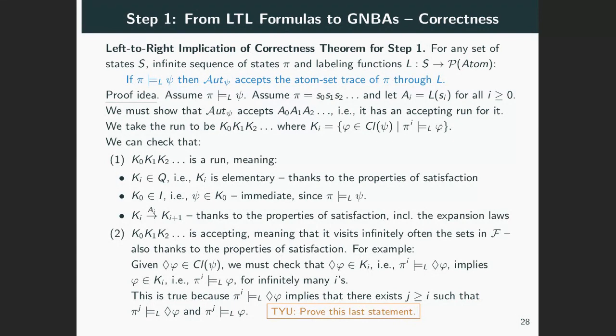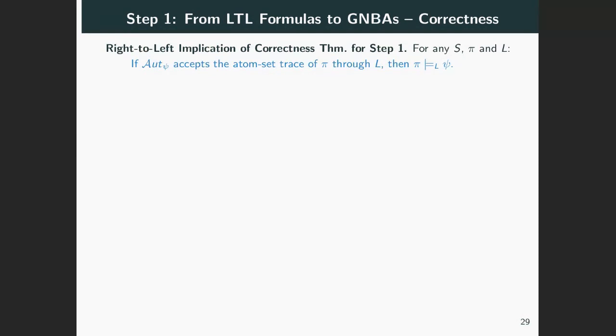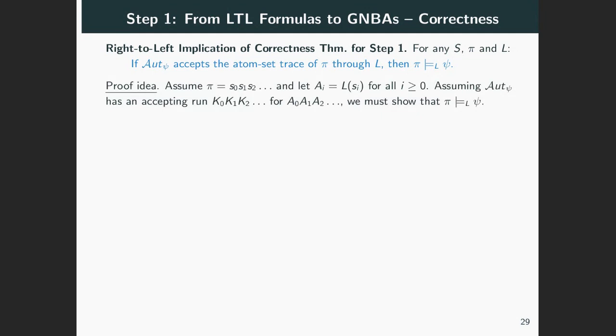This concludes the proof of the left to right implication. For the other implication, we assume the automaton has an accepting run K₀, K₁, and so on, for the atom-set trace of π through L, which we denote by A₀, A₁, and so on, by taking Aᵢ to be L(Sᵢ). What we need to show is that π satisfies our formula ψ.